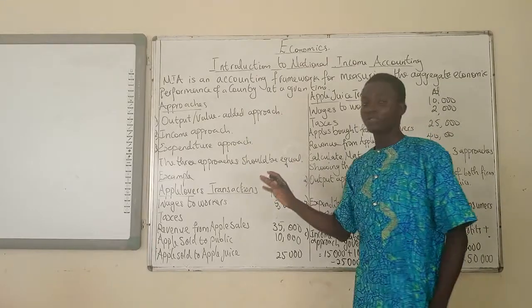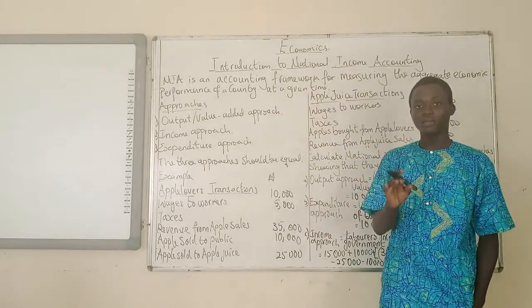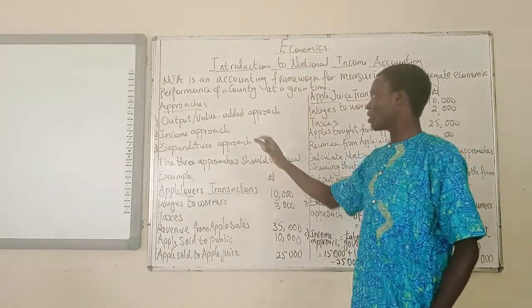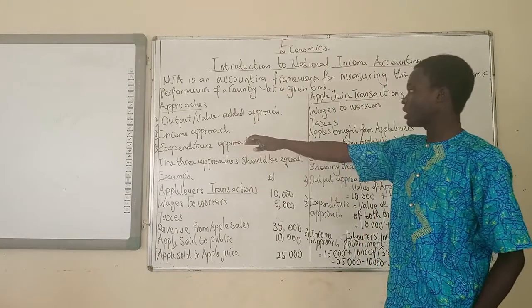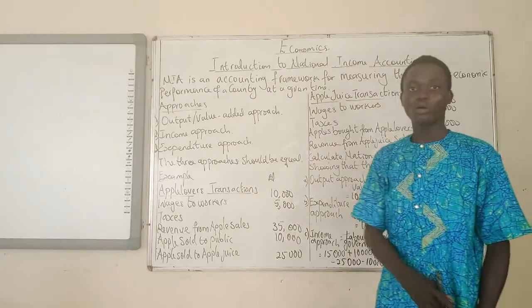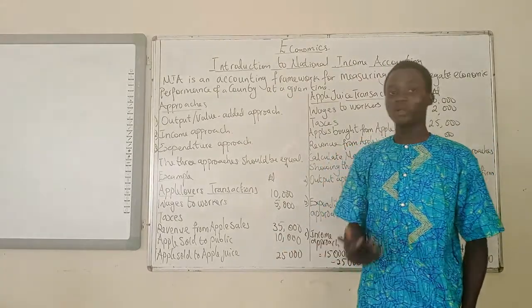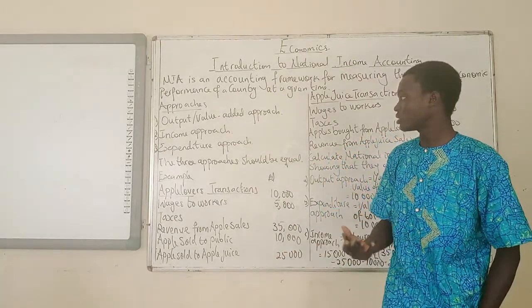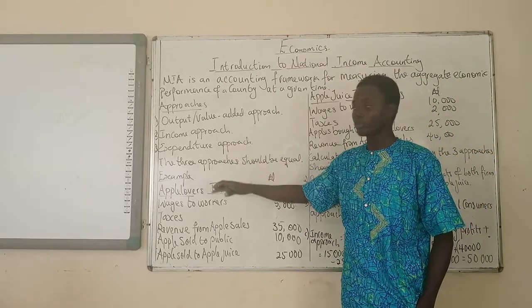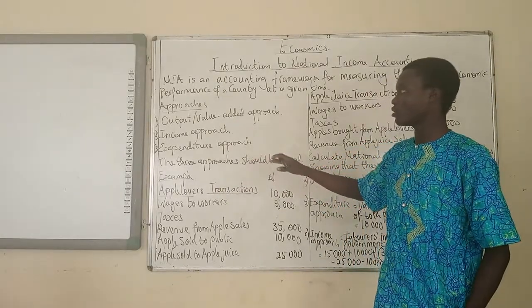Now there are three different approaches to measuring national income. Number one, we have the output or value-added approach — it could be called the output approach, it could be called the value-added approach, so it's the same thing. Number two, we have the income approach. And number three, we have the expenditure approach.